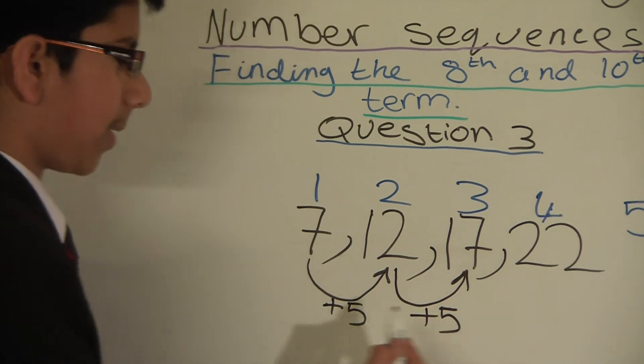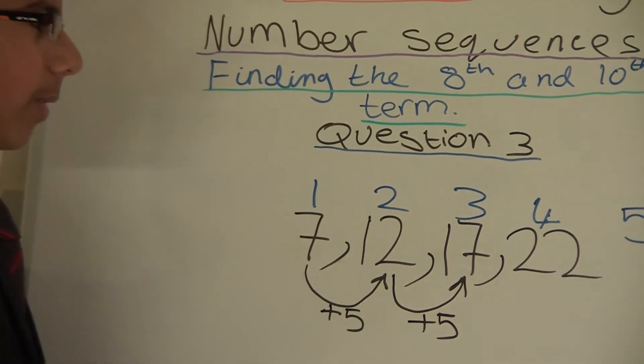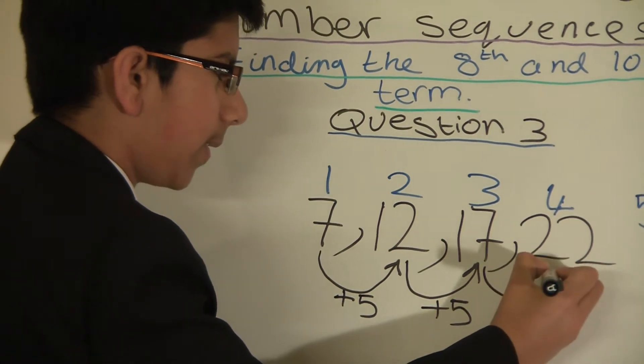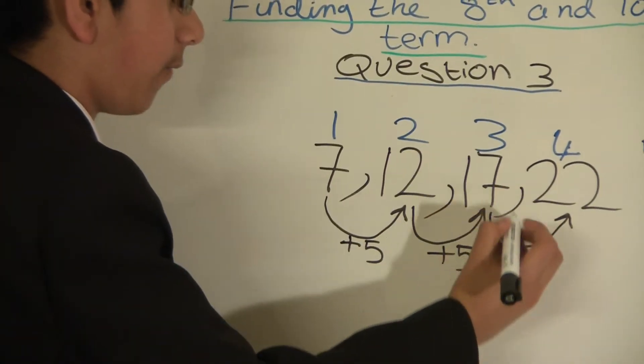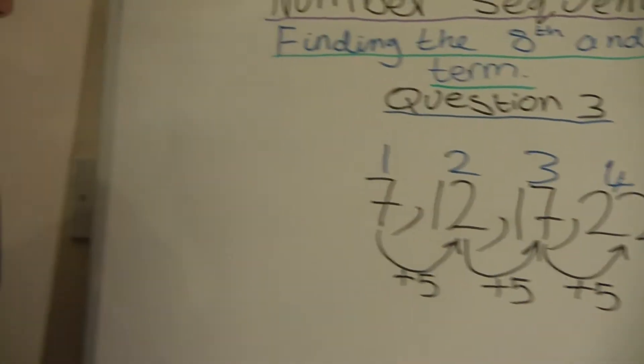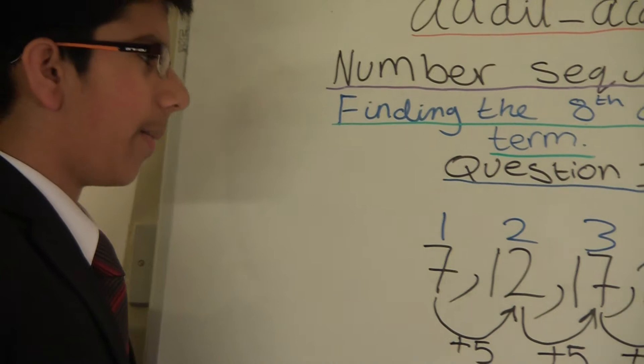You might be seeing the pattern now: plus 5, plus 5. I will do one more just to check. So between 17 and 22, position 3 and 4, plus 5. So now we have the pattern, we can work out the 8th term.